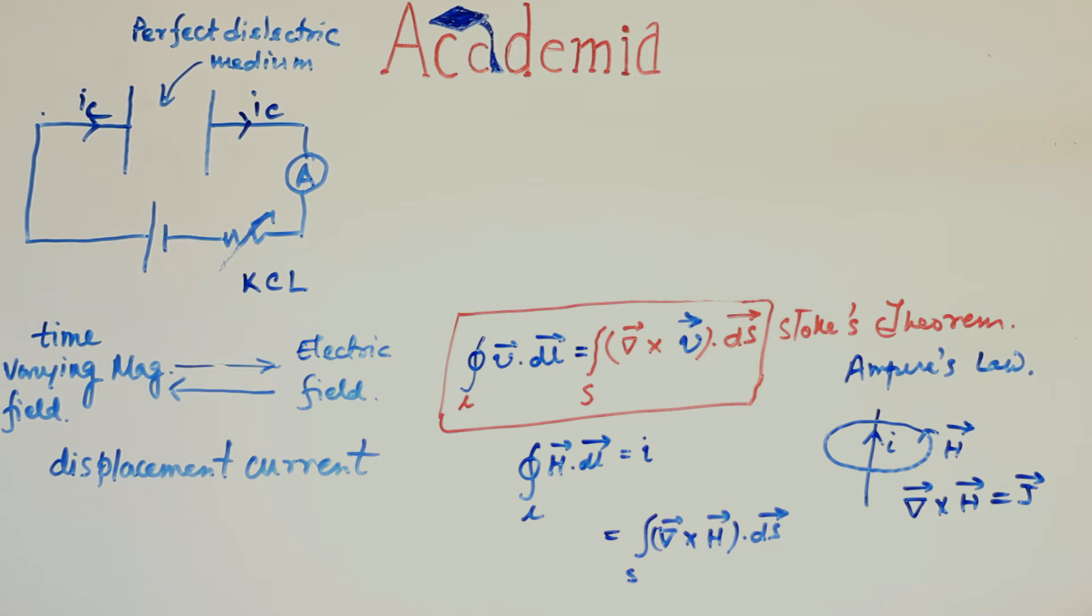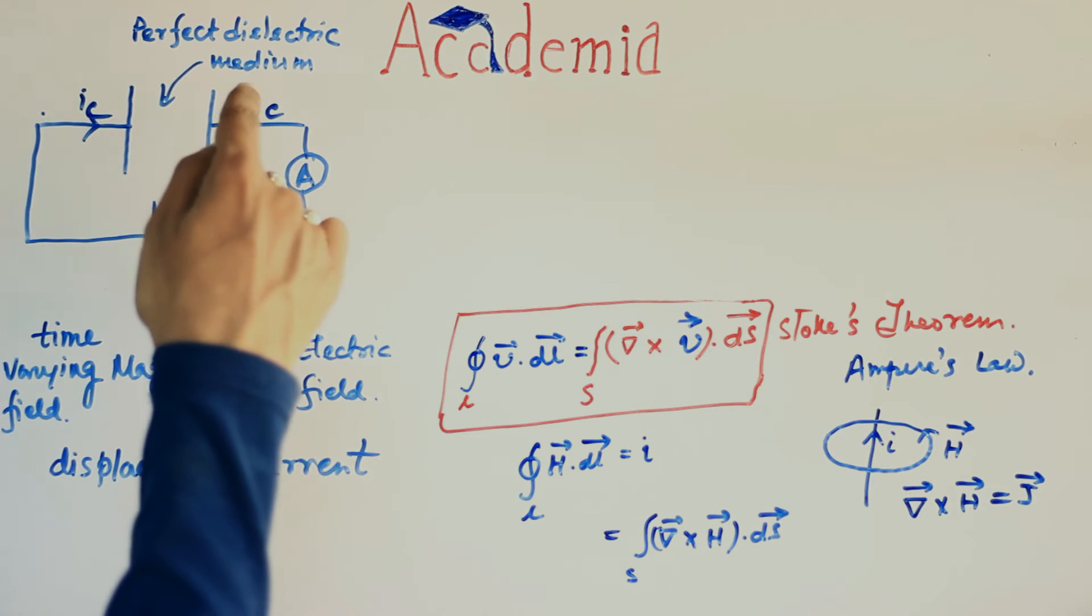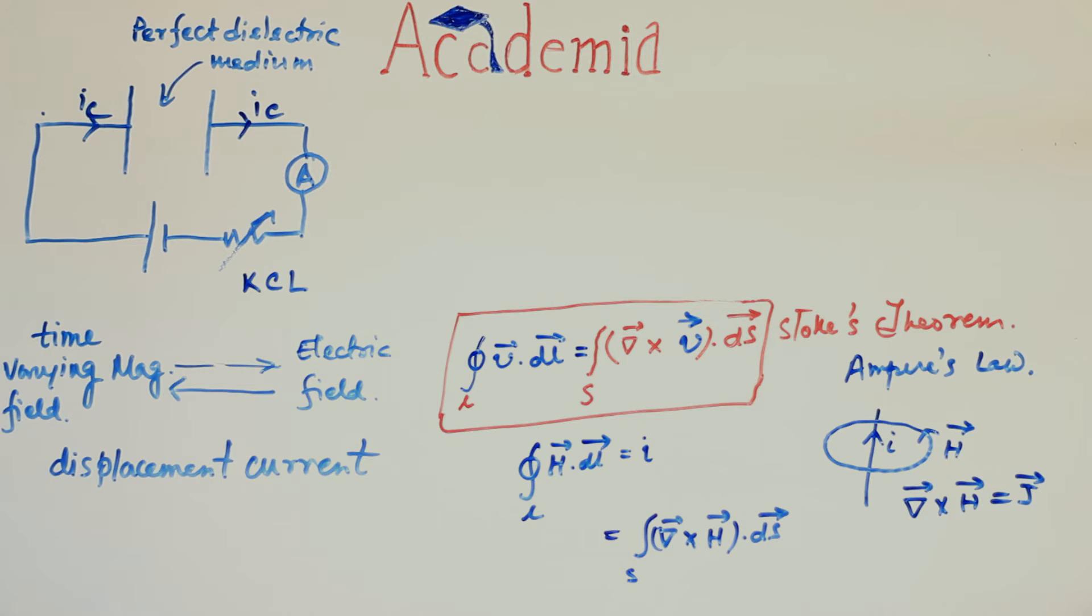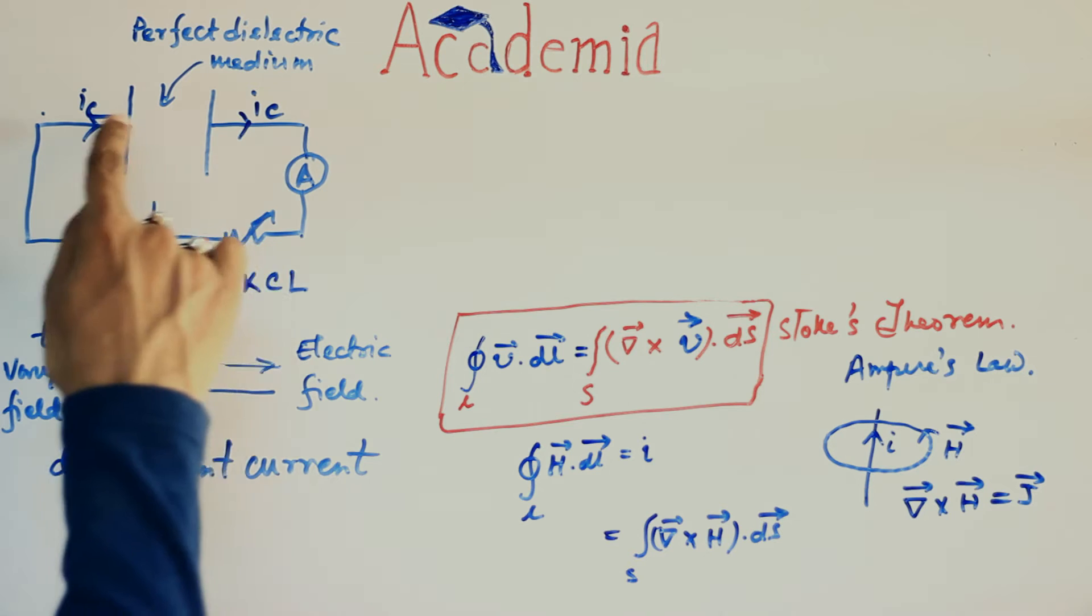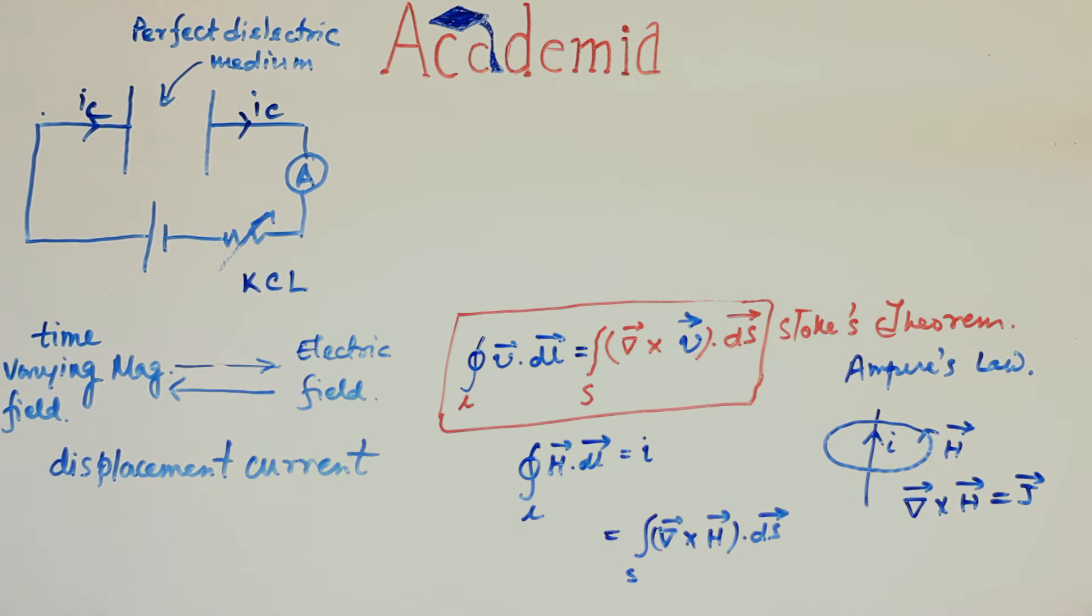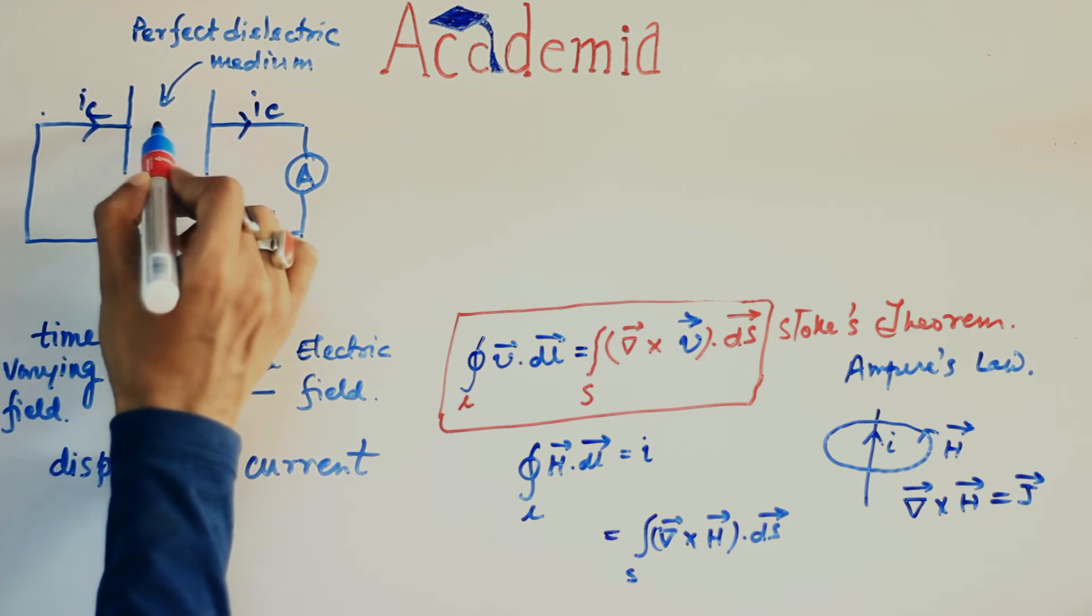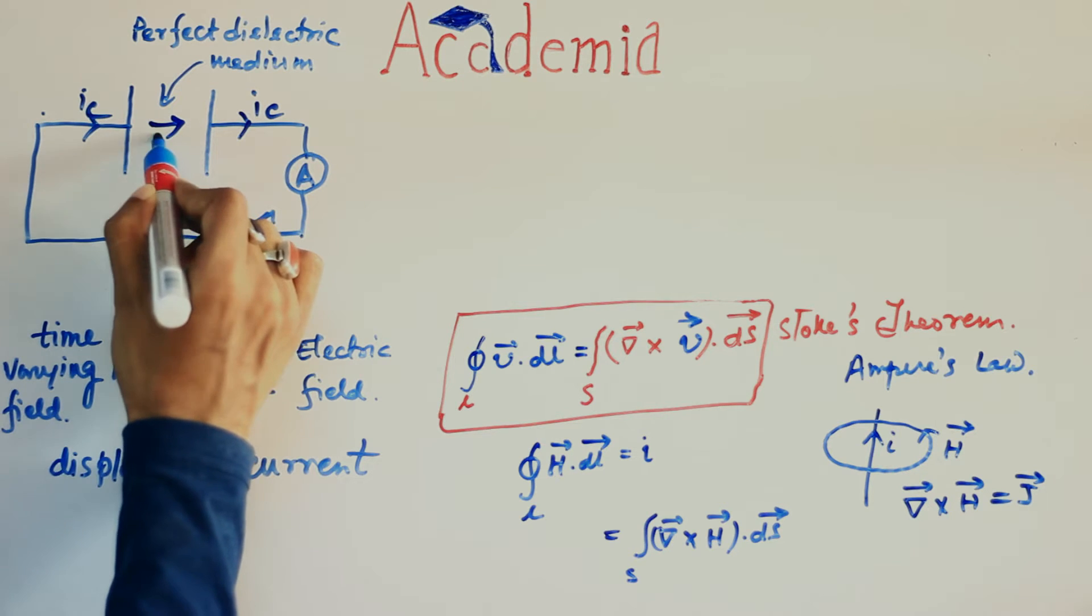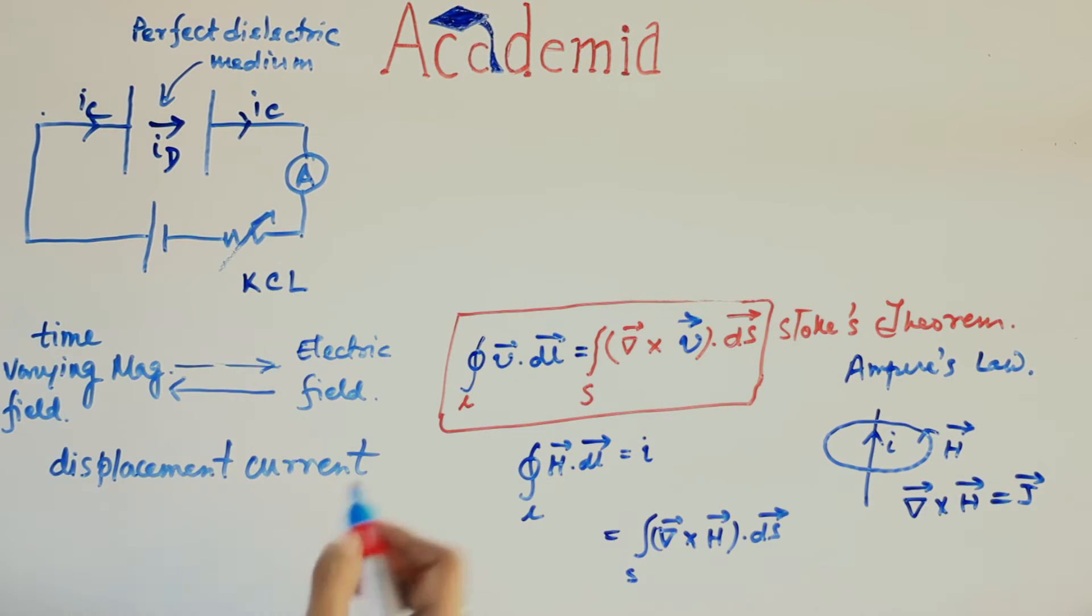Maxwell proposed the existence of a fictitious current in this dielectric space between the metal plates which is same in magnitude and direction of flow of conduction current IC. It can be considered to be simply a continuation of real conduction current from left plate to this right plate across this dielectric space. He named this fictitious current displacement current ID.